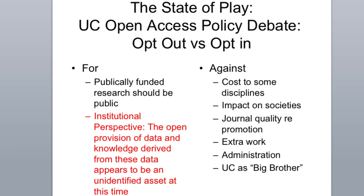The notion of journal quality is another concern — there is a perception that if you publish in an open access journal, the quality is not there. To some extent that has been true, because in the biosciences, journals like Science and Nature haven't had an open access equivalent. That's now changing. eLife is about to start publishing, and it intends to be on a par with Science and Nature. And then there's this notion of being told what to do — big brother concerns.